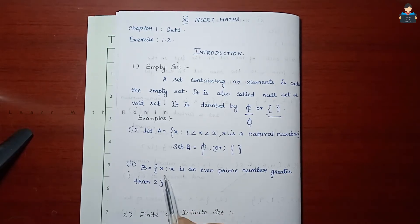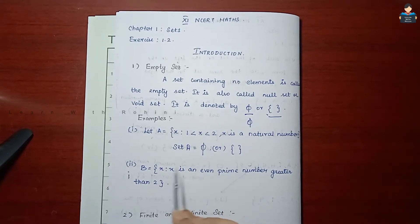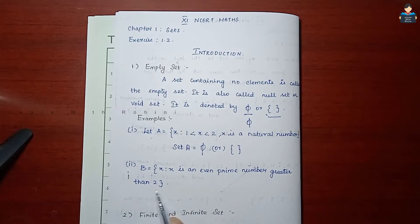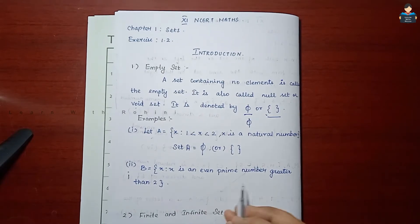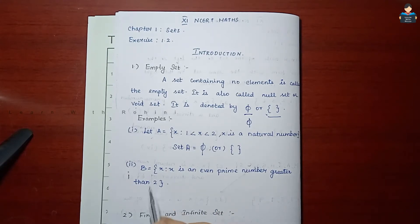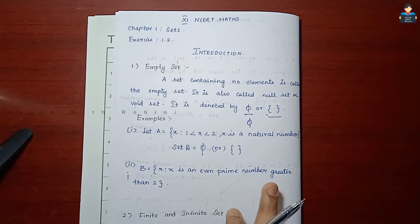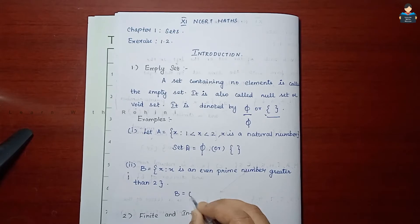Next, let set B = {x : x is an even prime number greater than 2}. We know that the only even prime number is 2. So there is no even prime number greater than 2, making set B a null set.